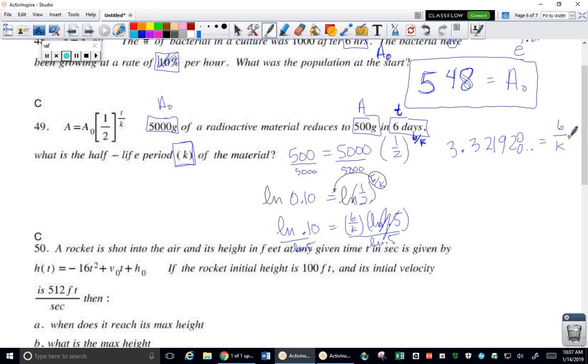Six over K. So we're going to multiply both sides by your denominator. Then I'm going to divide both sides by this 3.3 stuff.